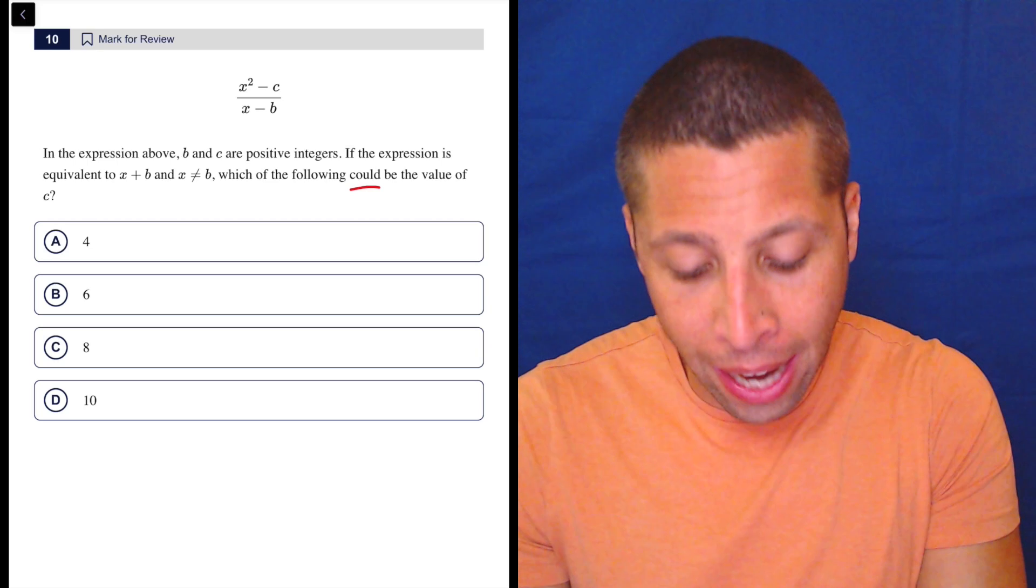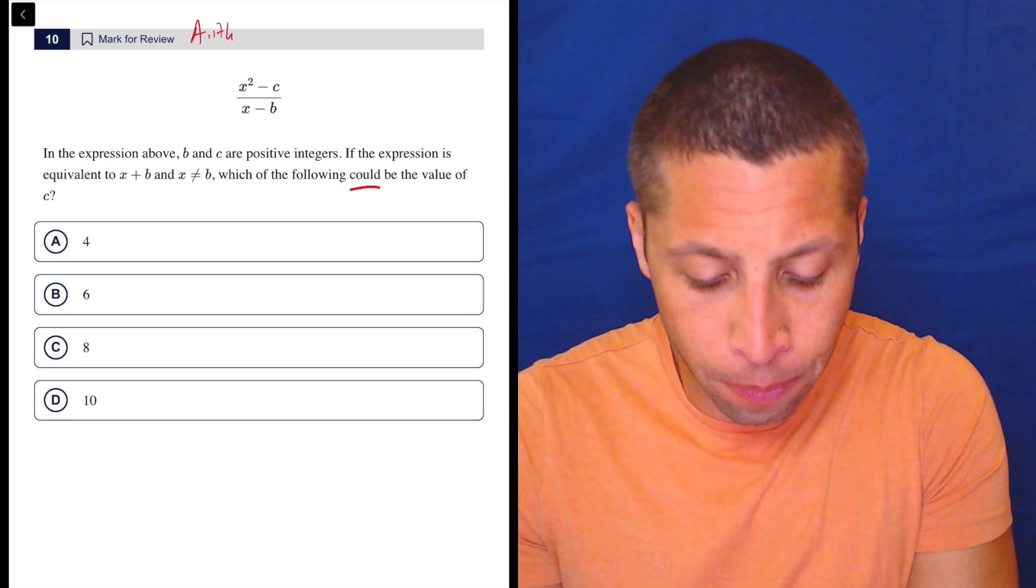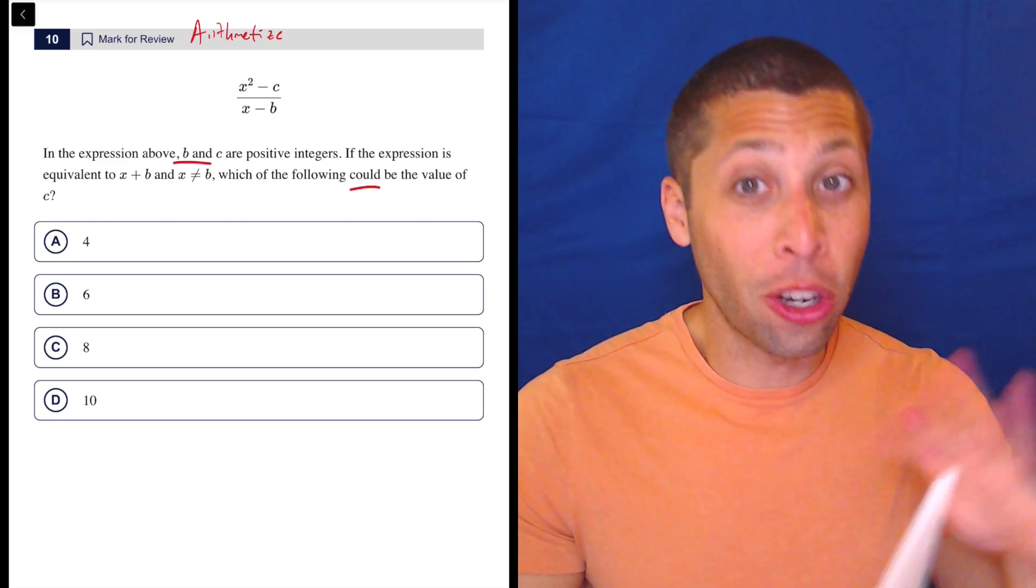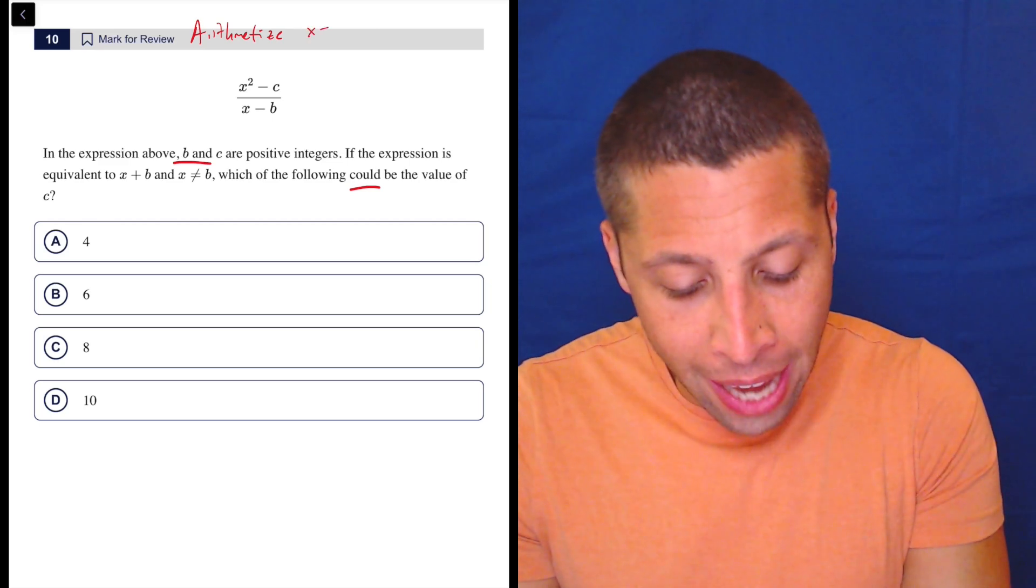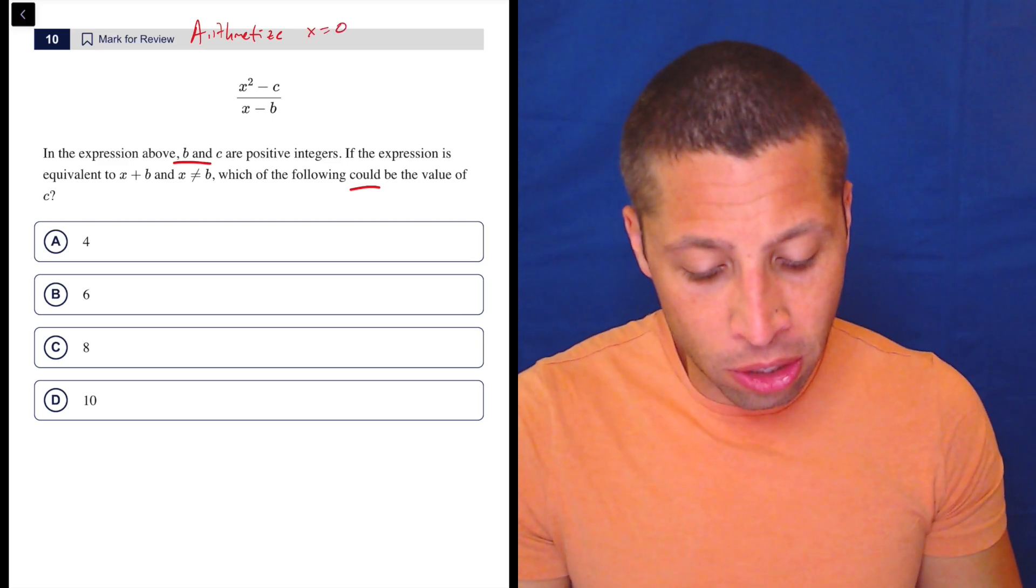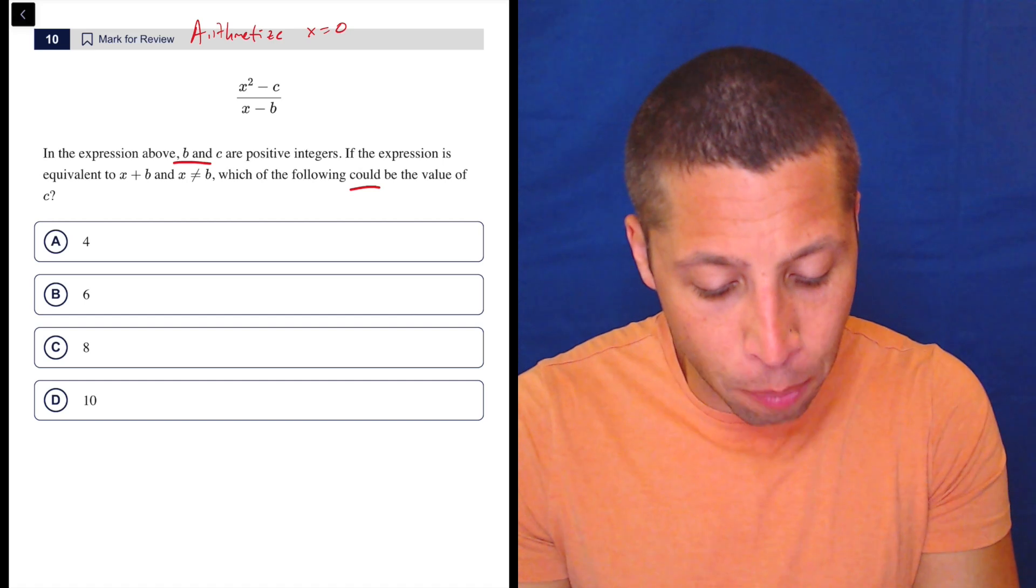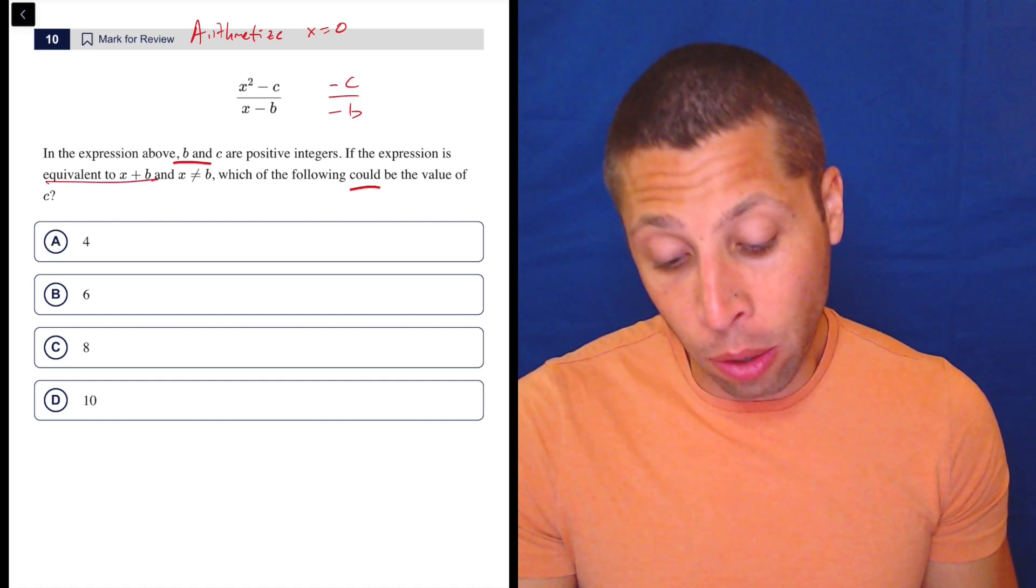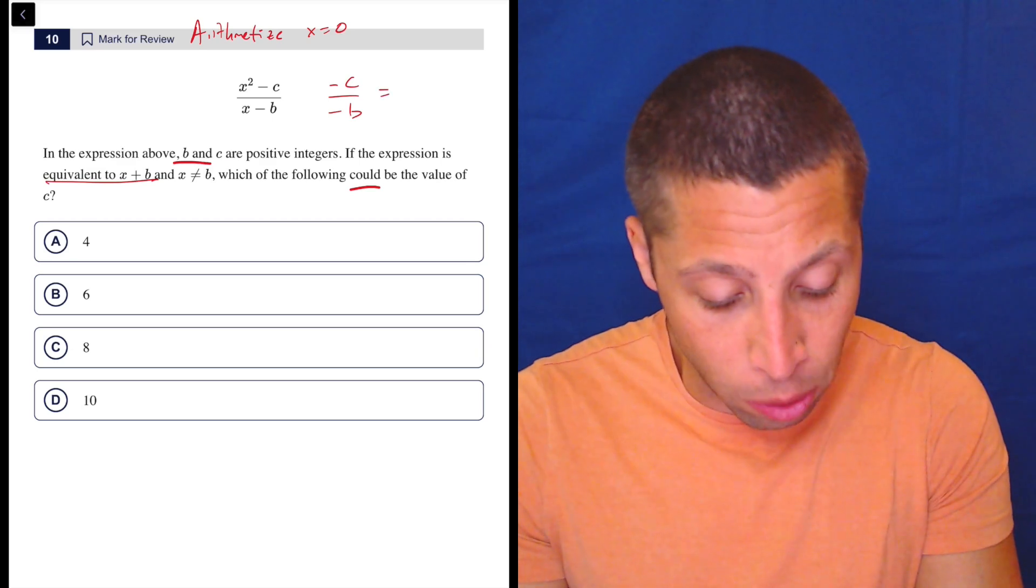What I could do is just make X go away. So if I arithmetize here, I might recognize that it seems to be that B and C are the stars of this show. So if we make X equal to zero, suddenly this is a much easier thing to think about. Basically, we end up with negative C over negative B, and that's supposed to be equivalent to X plus B. So if the X is zero, then this is just equal to B.